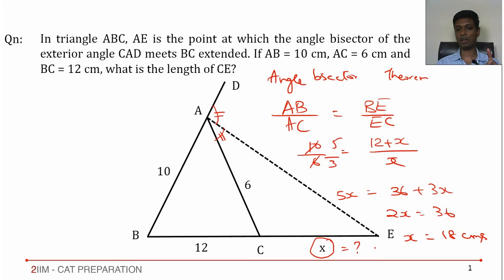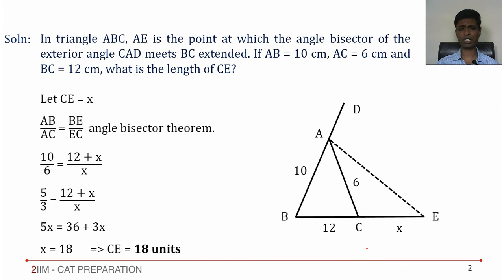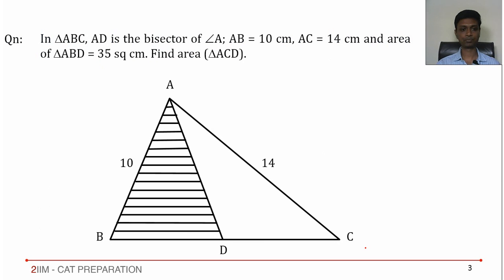Remember, the angle bisector theorem works for both the internal angle and the external angle. I'll skip the digital written solution and go to the next question. AD is the bisector of angle A, AB equals 10 centimeters, AC equals 14.